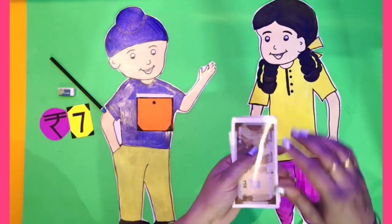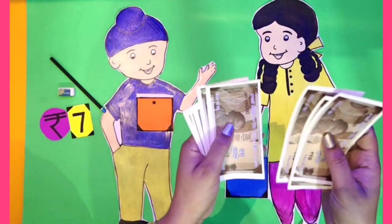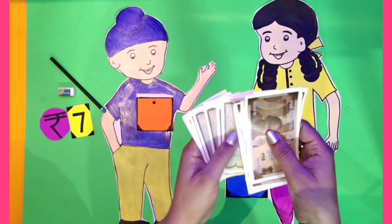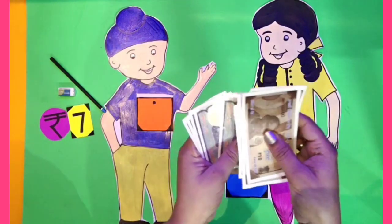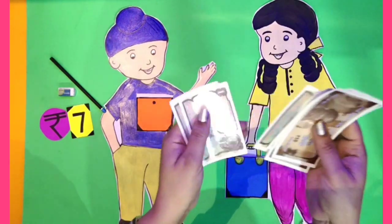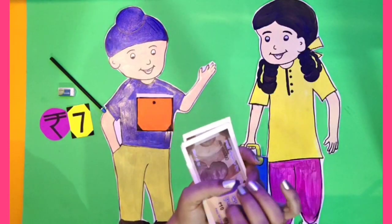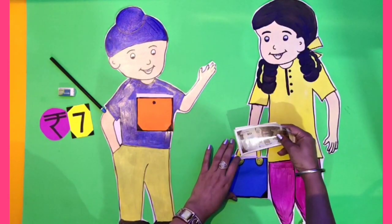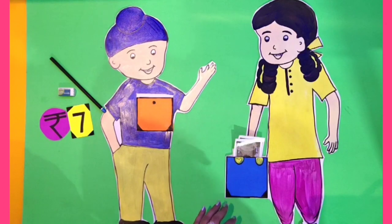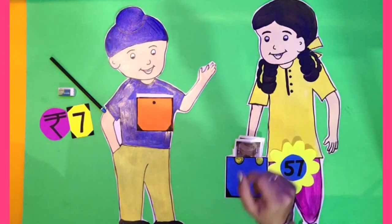Let's count 10, 20, 30, 40, 50, 51, 52, 53, 54, 55, 56, 57. Kids, there are 57 rupees in Arpan's purse.